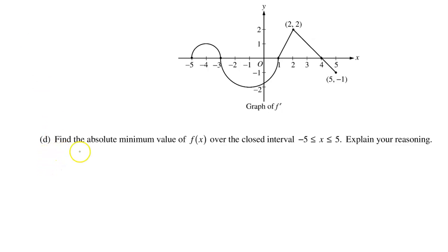Part d. Find the absolute minimum value of f of x over the closed interval from negative 5 to positive 5. Explain your reasoning.